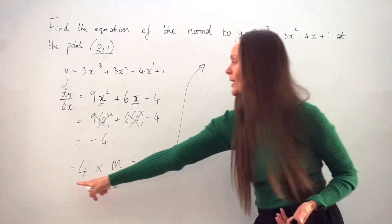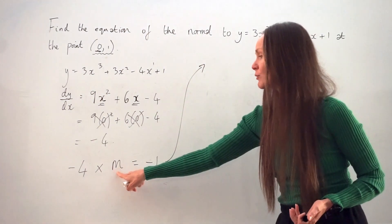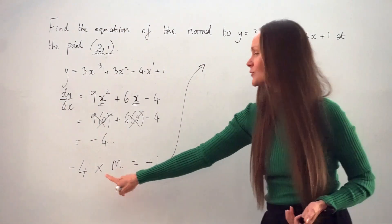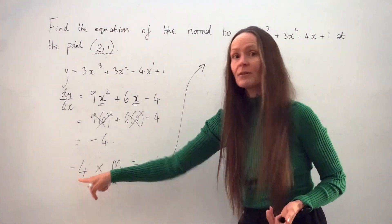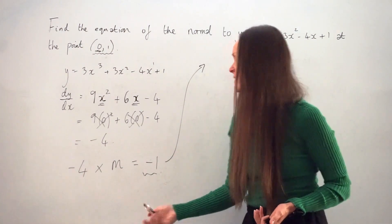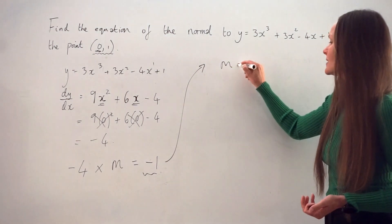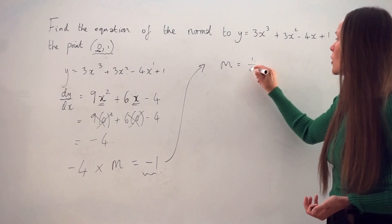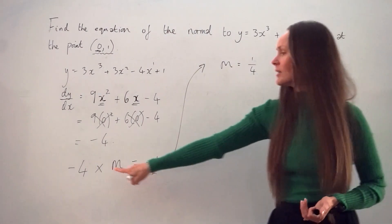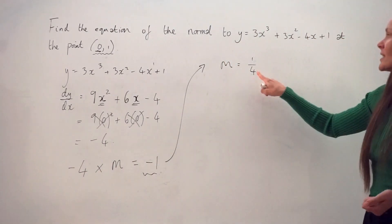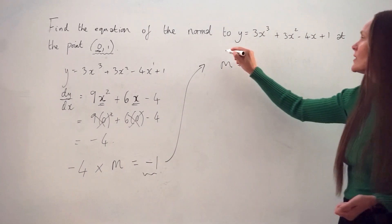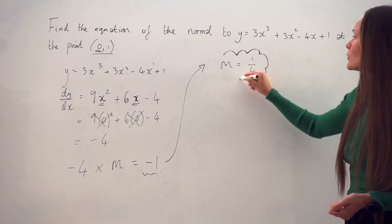So if I want to solve this equation to work out the value of m, the gradient of the normal, I have to divide by negative 4 on both sides. So that will give me m is equal to positive a quarter, as negative 1 divided by negative 4 is positive a quarter. So this is the gradient of our normal.